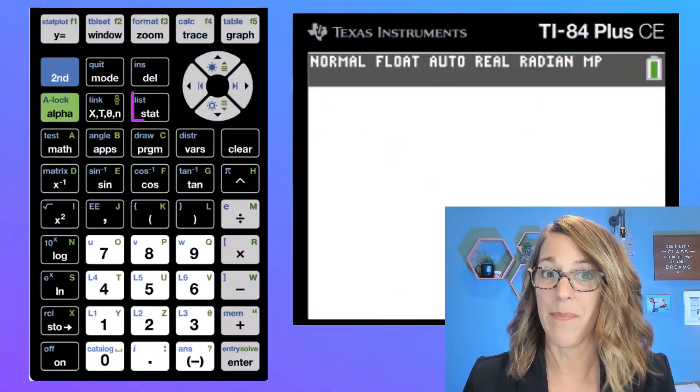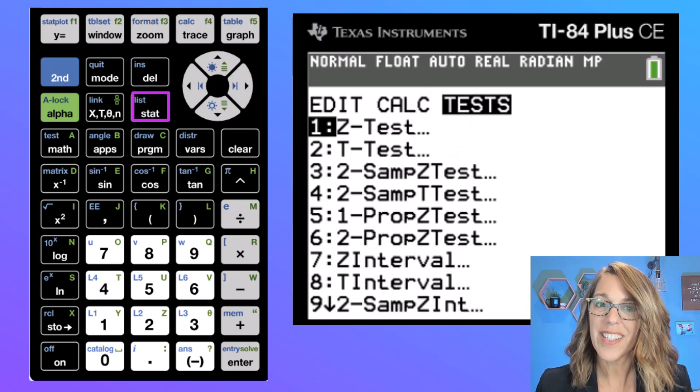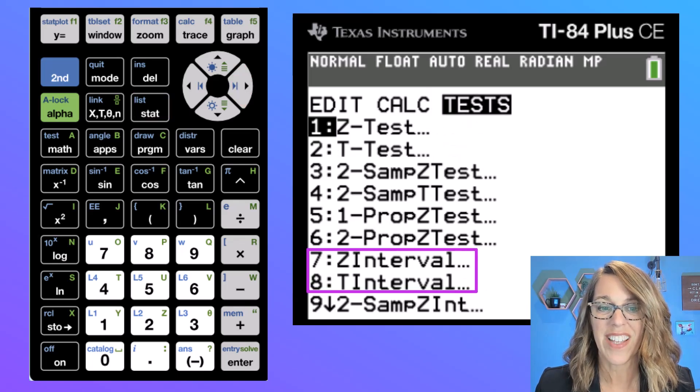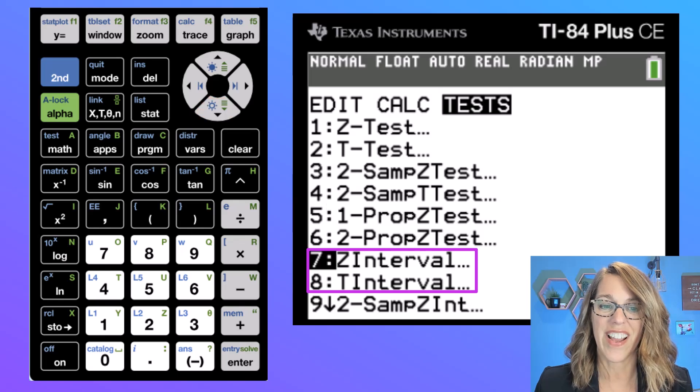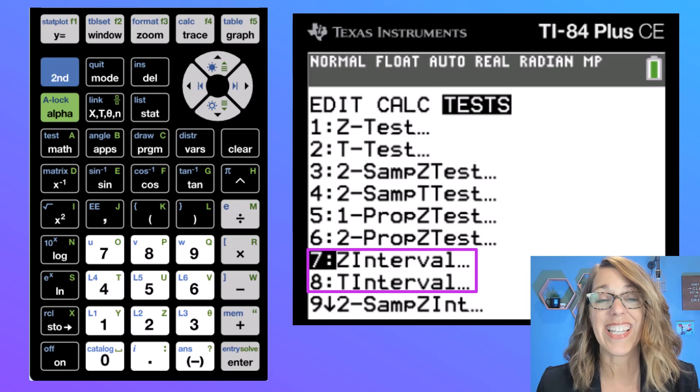To accomplish number one, we want to go to our calculator's stat menu. So we'll go stats, over here to tests, and we're looking for those interval options. As I scroll down here, I noticed that seven is a Z interval and eight is a T interval.